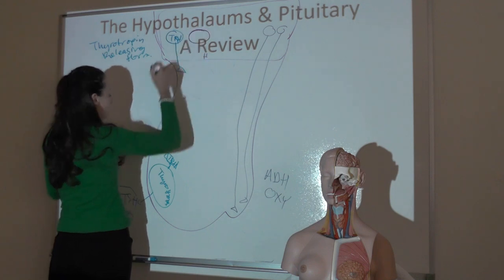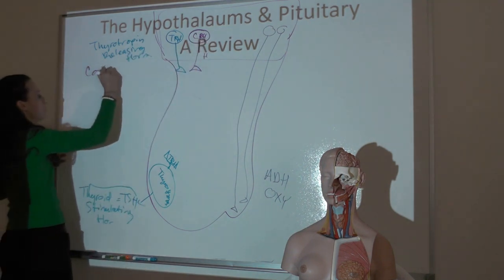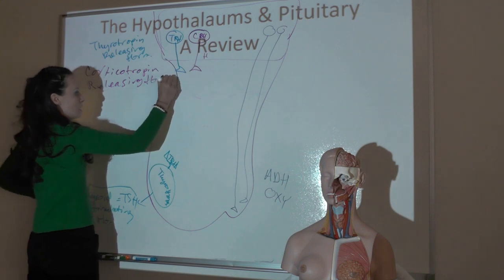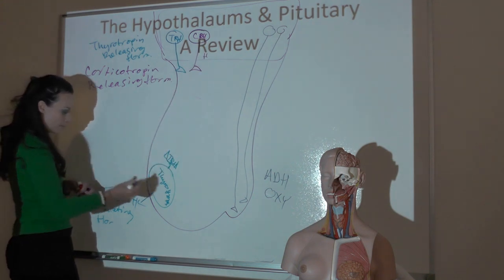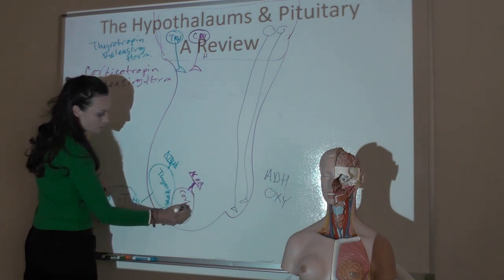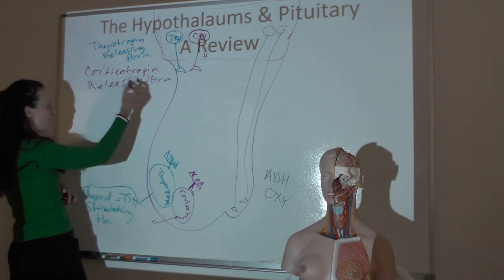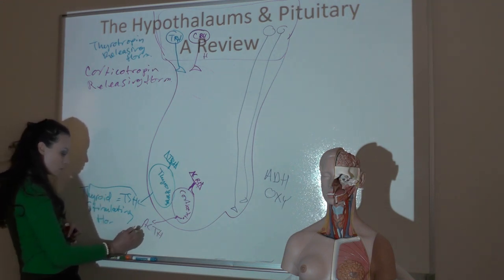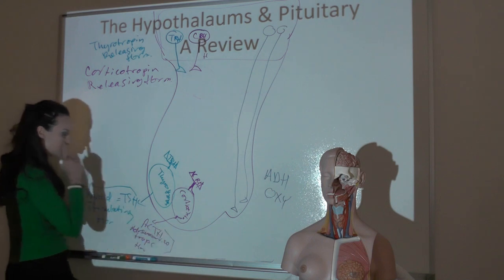The HPA axis—the hypothalamo-pituitary-adrenal axis—is initiated by CRH, the corticotropin-releasing hormone. It enters the hypothalamal-hypotheseal portal system, travels through the primary plexus, portal veins, and secondary plexus, then binds to receptors on corticotropes—the only cells in the anterior pituitary with CRH receptors. When bound, they release corticotropin or ACTH, the adrenocorticotropic hormone.